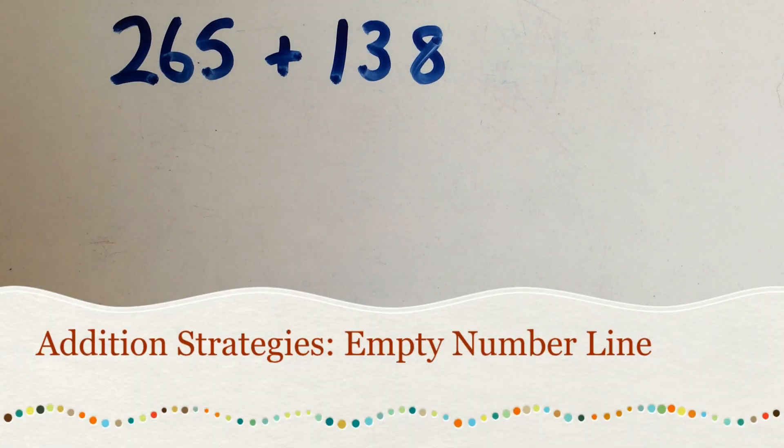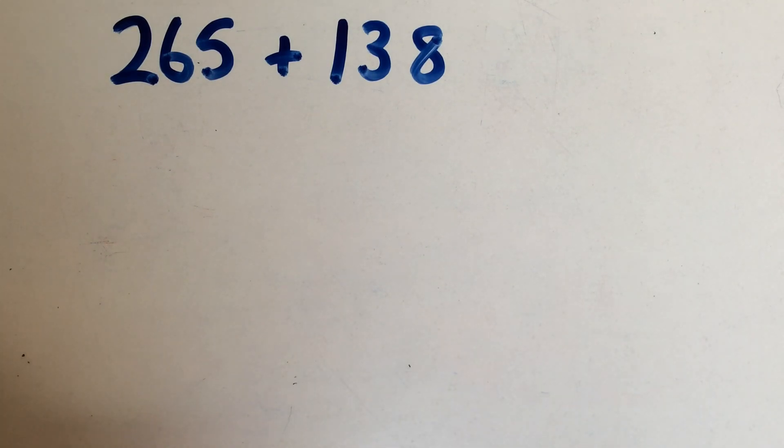In this strategy for addition, we'll be using the same example as we used for place value, but this time we're going to use an empty number line to add on.